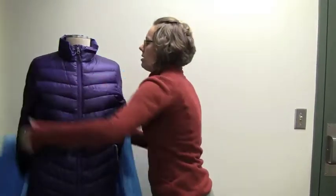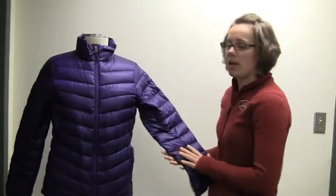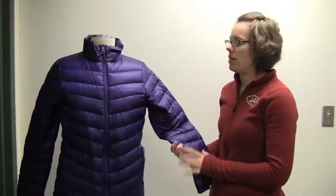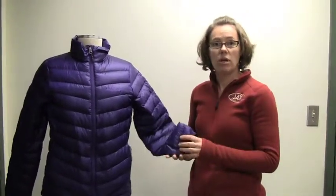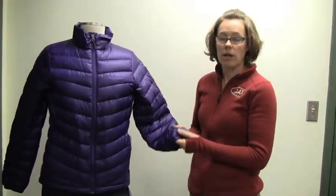Your second layer—this is your top layer—is going to be your insulating layer. Many different things can be used for this insulating layer. This is actually a light down jacket, so it can be used as an outer piece or an inner piece.